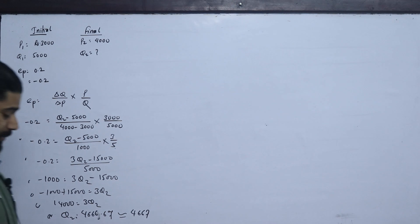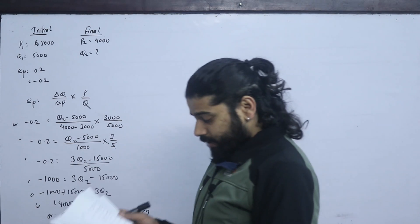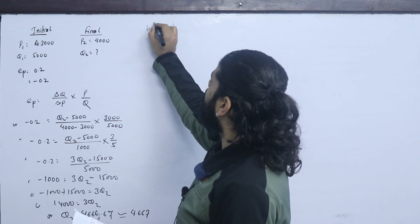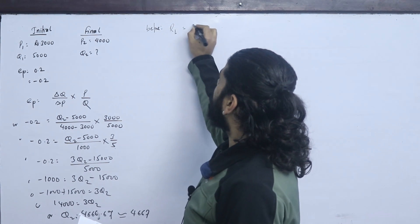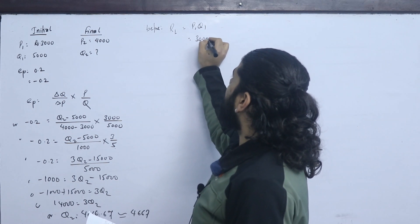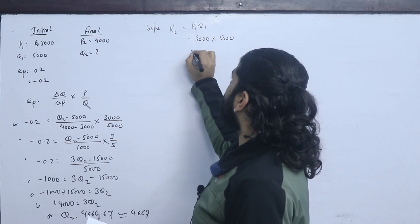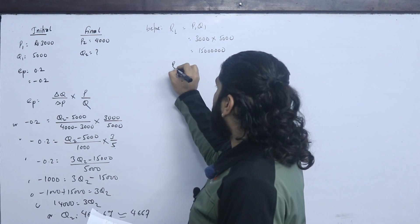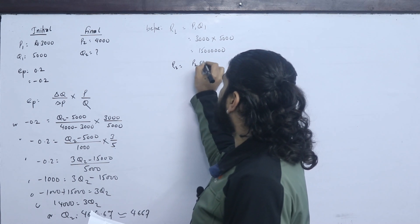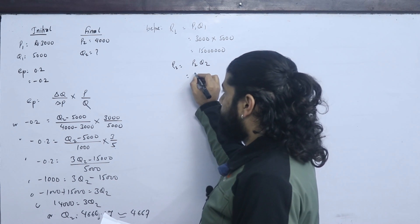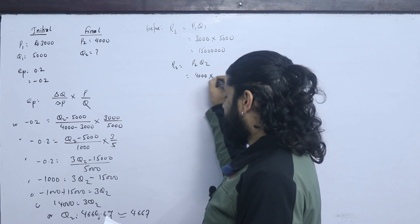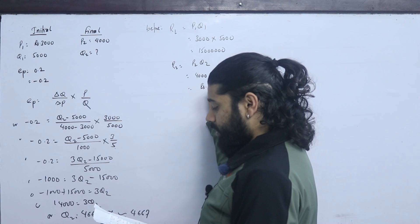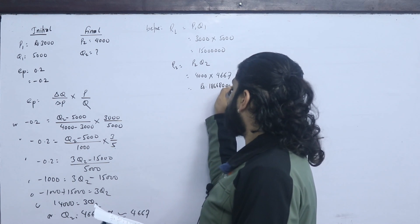Now we find total revenue before and after. R1 = P1 × Q1 = 3,000 × 500 = 15,00,000. R2 = P2 × Q2 = 4,000 × 4,667 = 18,668,000.